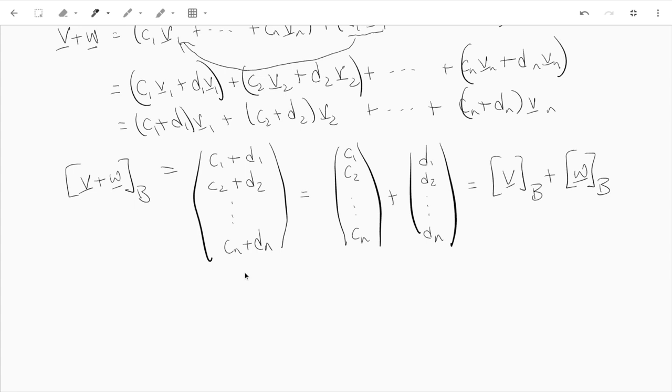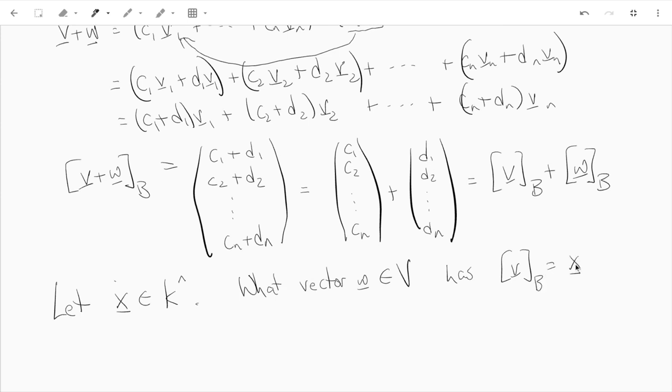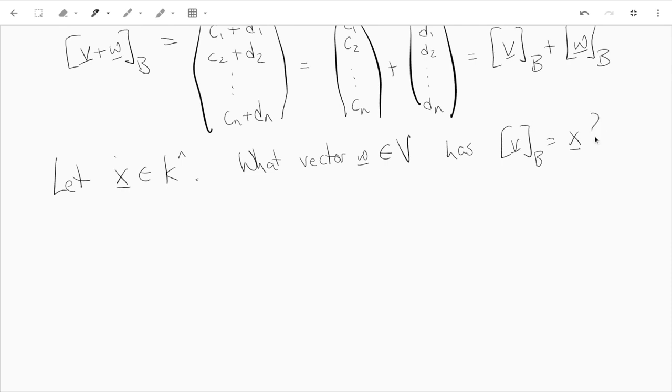What else can we do? I also wanted to show you why is this function onto. So let x be a column vector in K^n. And what vector w has coordinates equal to x?